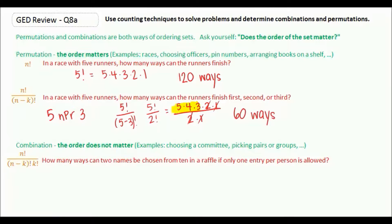Now for combination, the order does not matter. For example, if you're choosing a committee, which is just a group to represent people where no person has a different role than everyone else, that's a combination, because it doesn't matter in what order you choose those people. You might also see it picking pairs or groups. That's a combination.